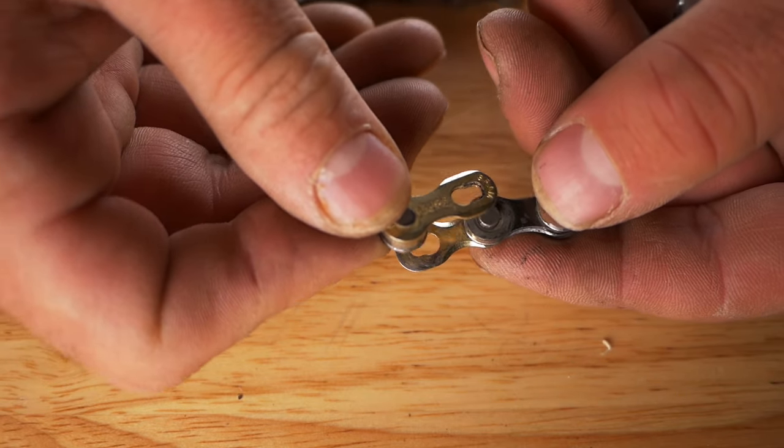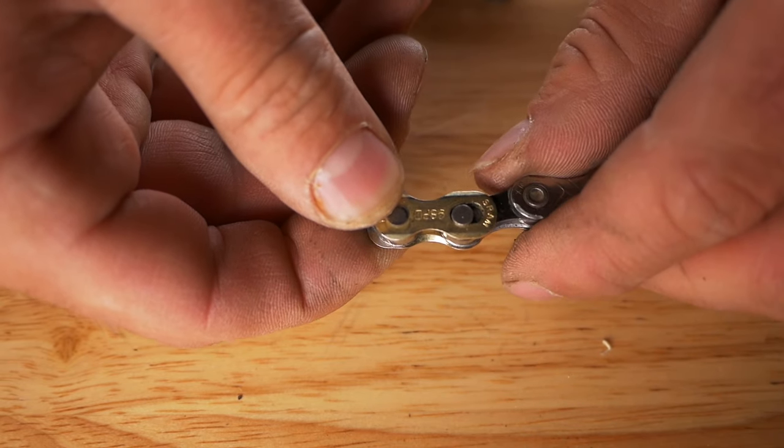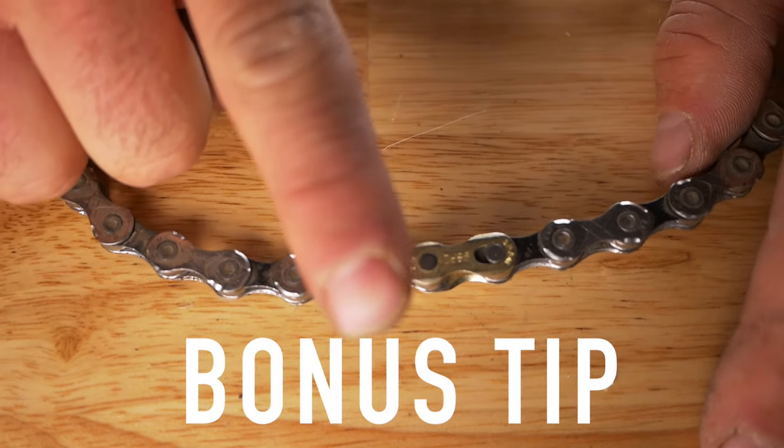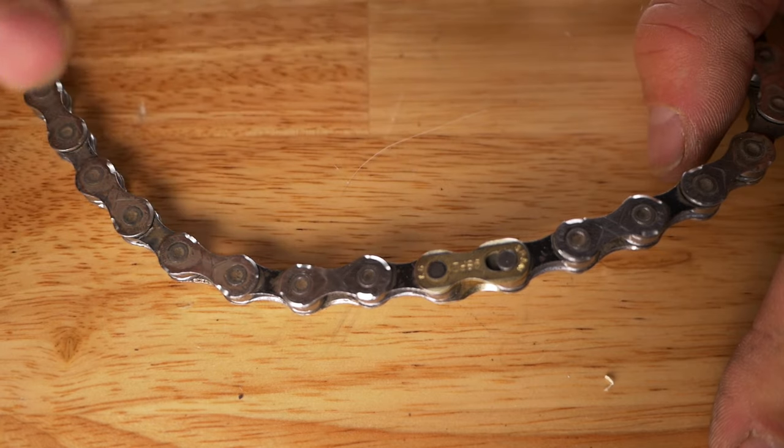Install the master link back together toward the middle of that slotted section right here. And then both sides will go in and then pull. Sometimes that doesn't work and you need to put this chain back onto the bike and give it a pedal because the pedal will have more force than your hands can provide.